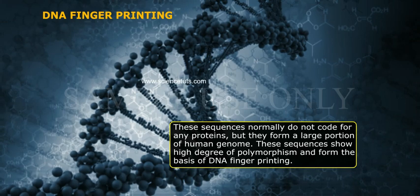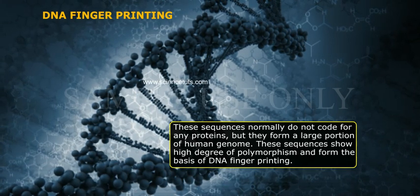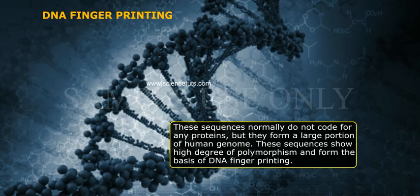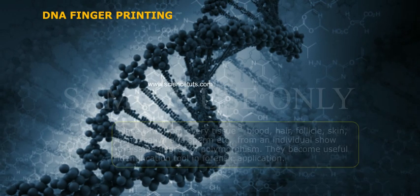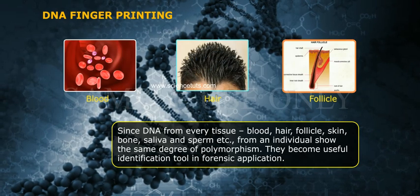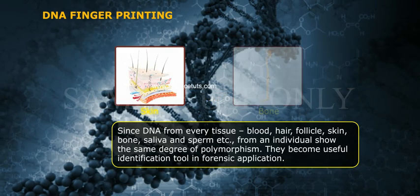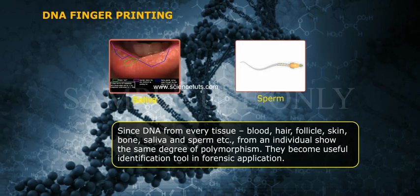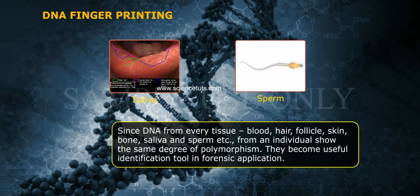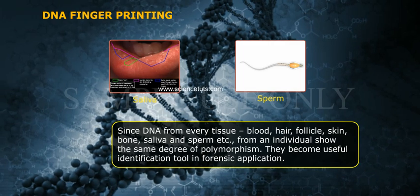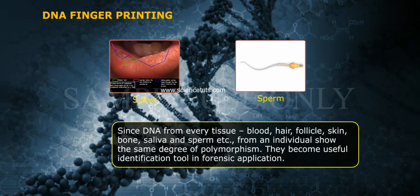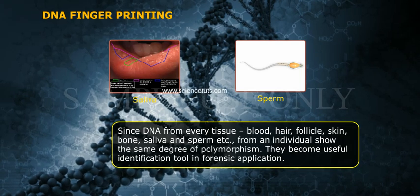These sequences show a high degree of polymorphism and form the basis of DNA fingerprinting. Since DNA from every tissue — blood, hair, follicle, skin, bone, saliva, and sperm, etc. — from an individual shows the same degree of polymorphism, they become useful identification tools in forensic applications.